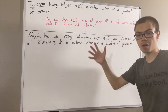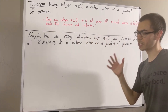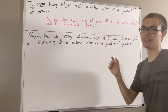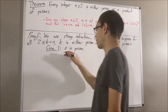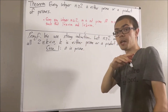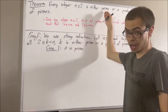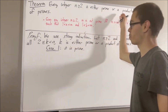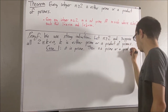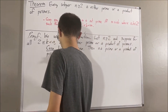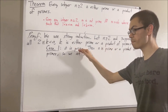We're going to split this up into two cases. We know that either n is prime or n is not prime. Let's first consider the case that n is prime. If n is prime, then we're done because we have that n is either prime or a product of primes. This completes the case where n is prime.